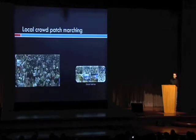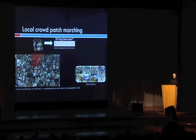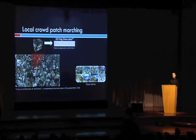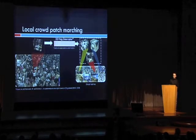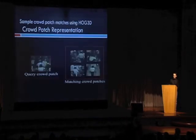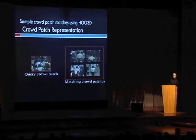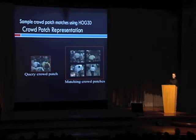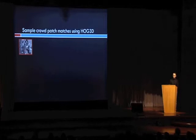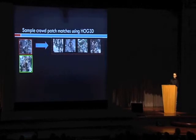Once we have this set of globally matching scenes, we obtain a crowd patch around the person we're interested in tracking and compute the 3D HOG descriptor, which captures both appearance and motion by obtaining spatial and temporal gradients. We then match this 3D HOG descriptor to the set of global matching scenes to obtain a set of matching crowd patches. On the left-hand side we have a query crowd patch, and on the right-hand side some of the top matching patches — similar both in appearance and in the motion exhibited by the people.